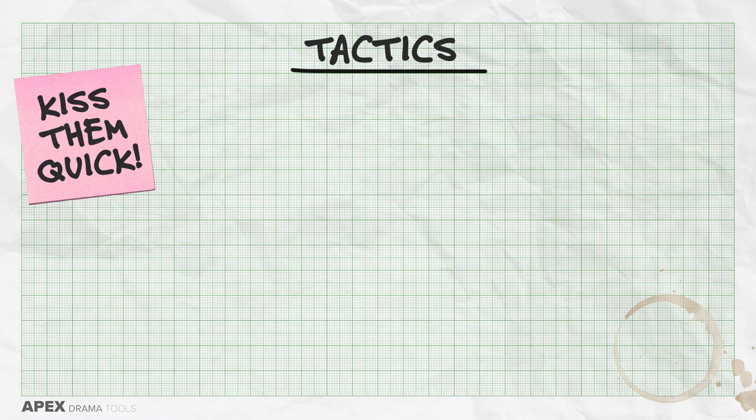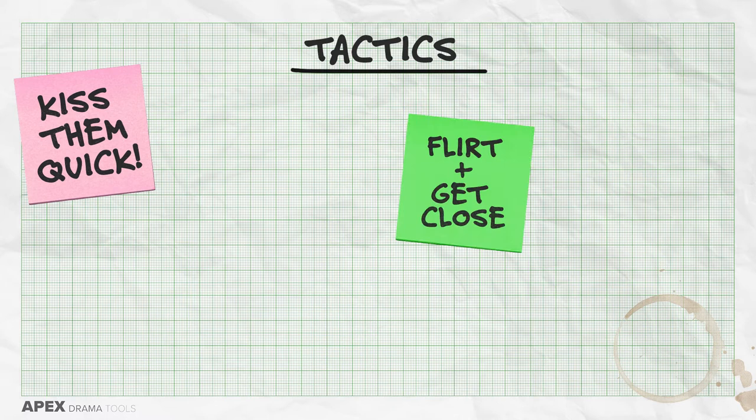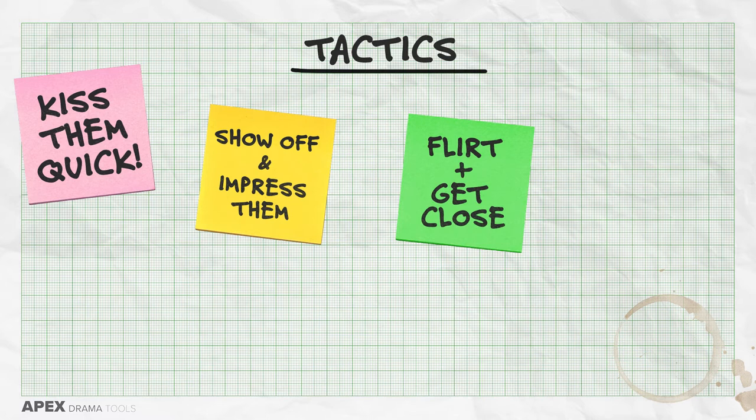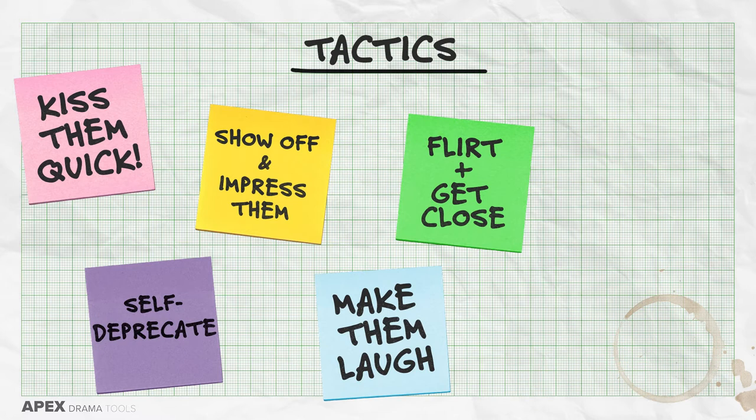So what tactics can you use as your character? One tactic might be to jump in and kiss the character quickly — surprise them and get it over and done with. Another tactic might be to flirt with them and gradually get closer. You may want to show off, boast, or try to impress them. Another tactic might be to make them laugh and amuse them. You may want to self-deprecate and gain sympathy. You might want to bully or intimidate them, or beg them. These are all different tactics humans use every day.